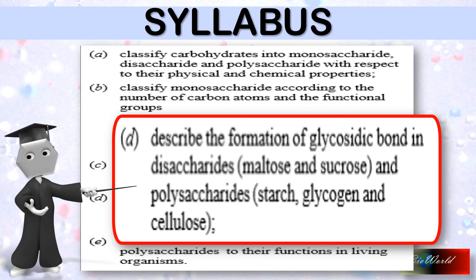We've now completed our discussion on glycosidic bonds found in maltose, sucrose, starch and glycogen. To refresh: the glycosidic bonds were alpha-1,4, alpha-1,2, and alpha-1,6. In my next video, I'll talk about cellulose. Bye-bye.